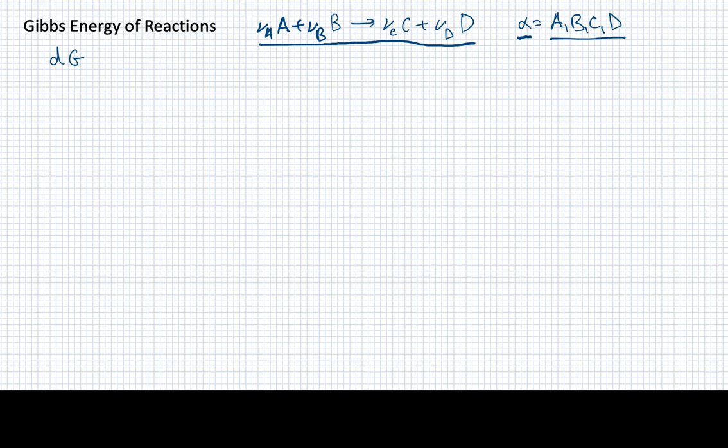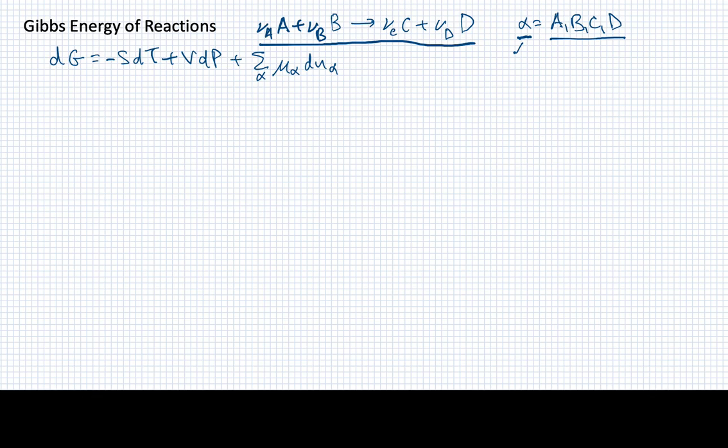To start with, we want to express the differential of our Gibbs energy. If we're just looking at thermodynamic systems, it would have a form that looks something like this, but this is for a one-component system. When we have multiple components, we then have to include a sum over all of those components of the chemical potential of each component times the differential of the number of moles in that component, where the alphas are all of these reaction species taking part.